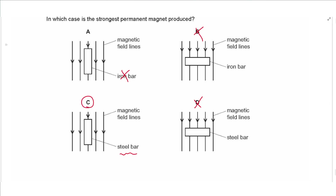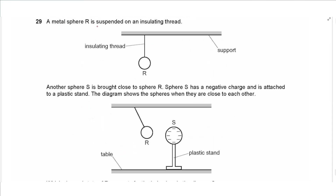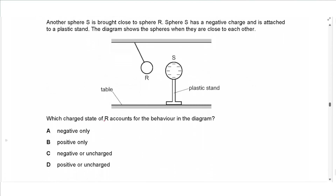Question 29: Metal sphere R is suspended on an insulating thread. Negatively charged sphere S is brought close and they attract. Attraction can happen if R is positively charged, or if R is uncharged — because the negative charge on S repels electrons in R, leaving the near side positively charged, causing net attraction. So R can be positive or uncharged. The answer is D.